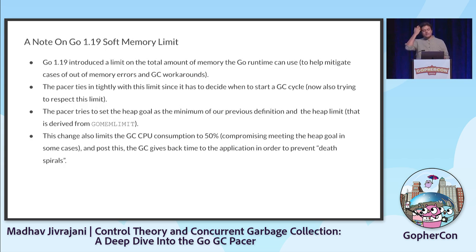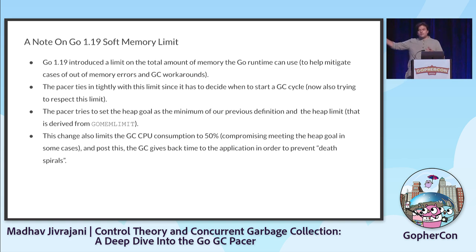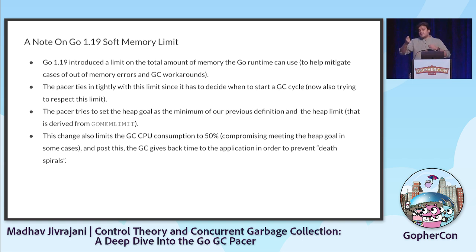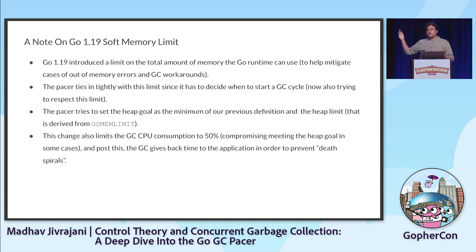A small note: the soft memory limit ties into the GC Pacer. The heap goal the Pacer sets is now the minimum of the calculated heap goal and a value computed from GOMEMLIMIT. For those working with GOGC and GOMEMLIMIT simultaneously, there's an excellent talk from GopherCon earlier this year by the author of GOMEMLIMIT that you should check out. You might also experience more memory consumption due to something known as death spirals.